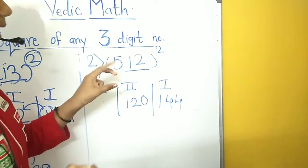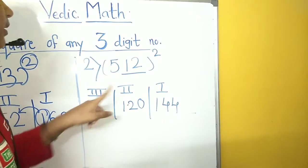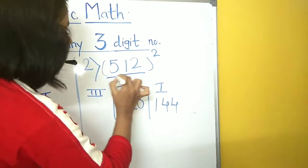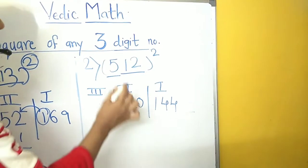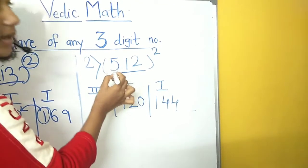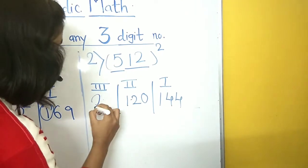Now, in the last step, we will square the number in the hundredths place. The square of the number 5 is 25.